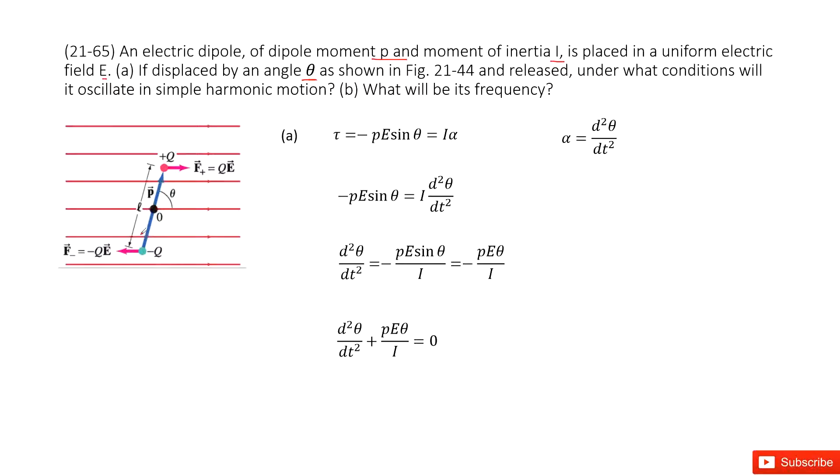The distance is L. So we can write the torque as τ = -PE sin θ. This is written in the textbook, and equals I times angular acceleration.